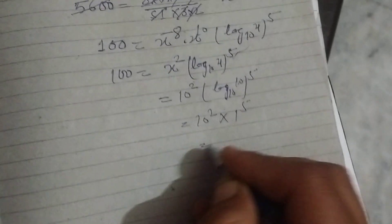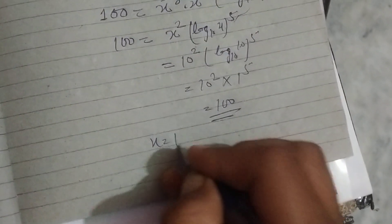So 10 squared times 1 to the power 5 equals 100. Therefore, x equals 10.